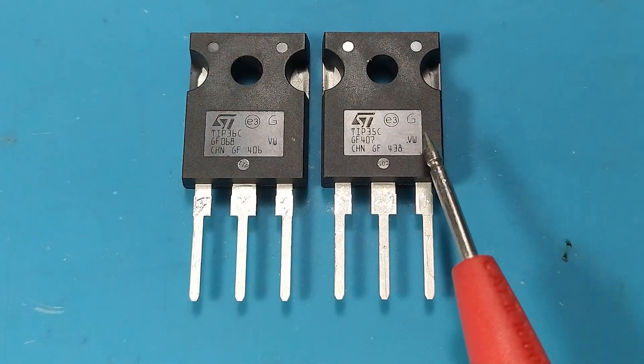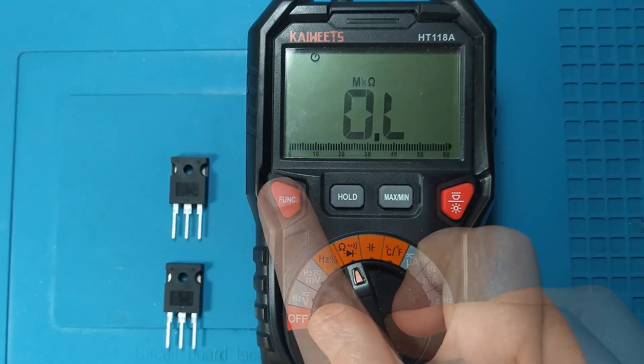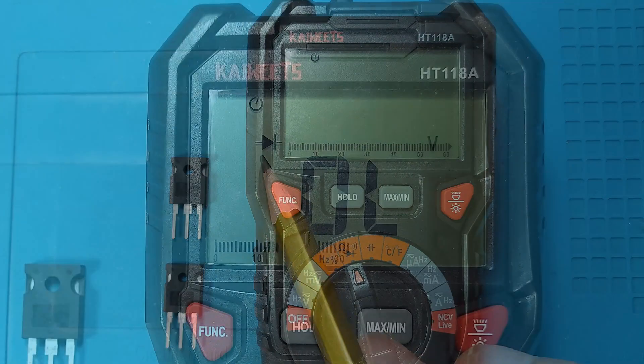To test these transistors we select the multimeter on the diode measurement area where we have the diode symbol.